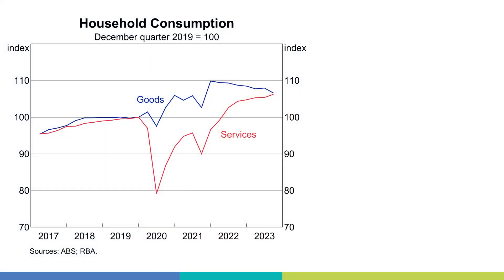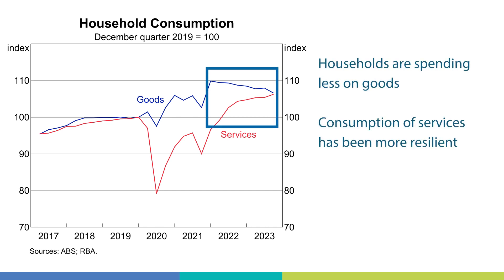Switching our focus to spending and consumption now, the blue line represents household spending on goods such as clothing and footwear, and the red line shows consumption of services such as eating out and entertainment activities. Both are shown as an index which helps us compare the level of consumption now to what it was in the past. In aggregate, households are spending less on goods than they were a year ago, which you can see with the blue line drifting lower, while consumption of services has been more resilient.